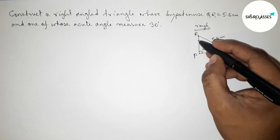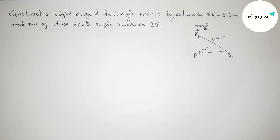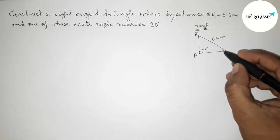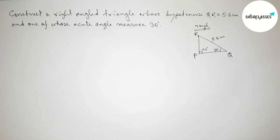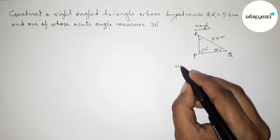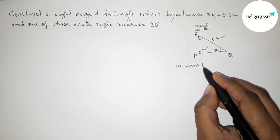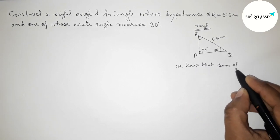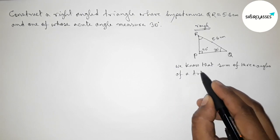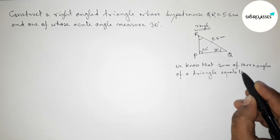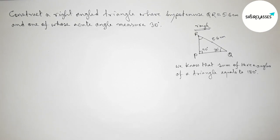One of the acute angles is given as 30 degrees. We can take angle Q or angle R as 30 degrees — here I am taking angle Q equals 30 degrees. Next, we have to find angle R using the angle sum theorem: the sum of the three angles of a triangle equals 180 degrees.